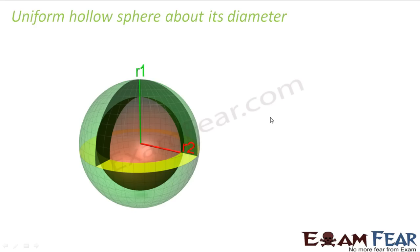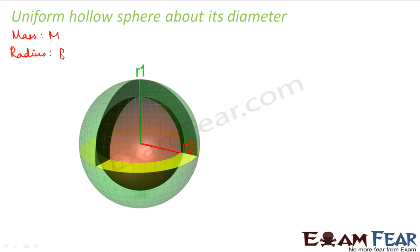In this case we have drawn this sphere trying to show that the inside of the sphere is empty. It is hollow from inside — it is just the outer surface which is present here. So let us say that the mass of the sphere is capital M and the radius of the sphere is capital R.